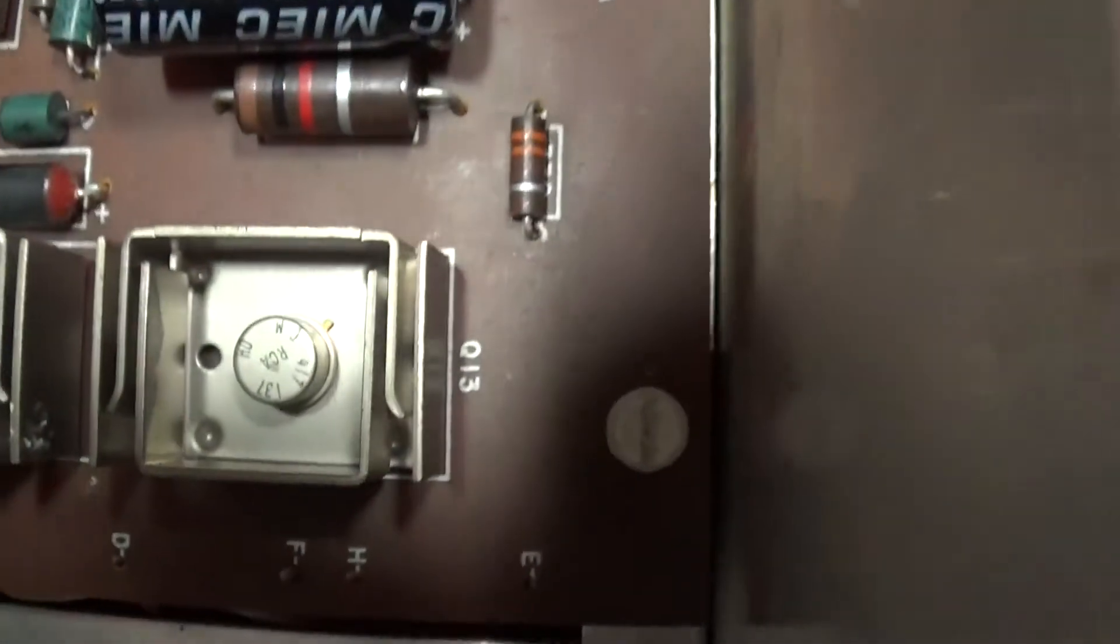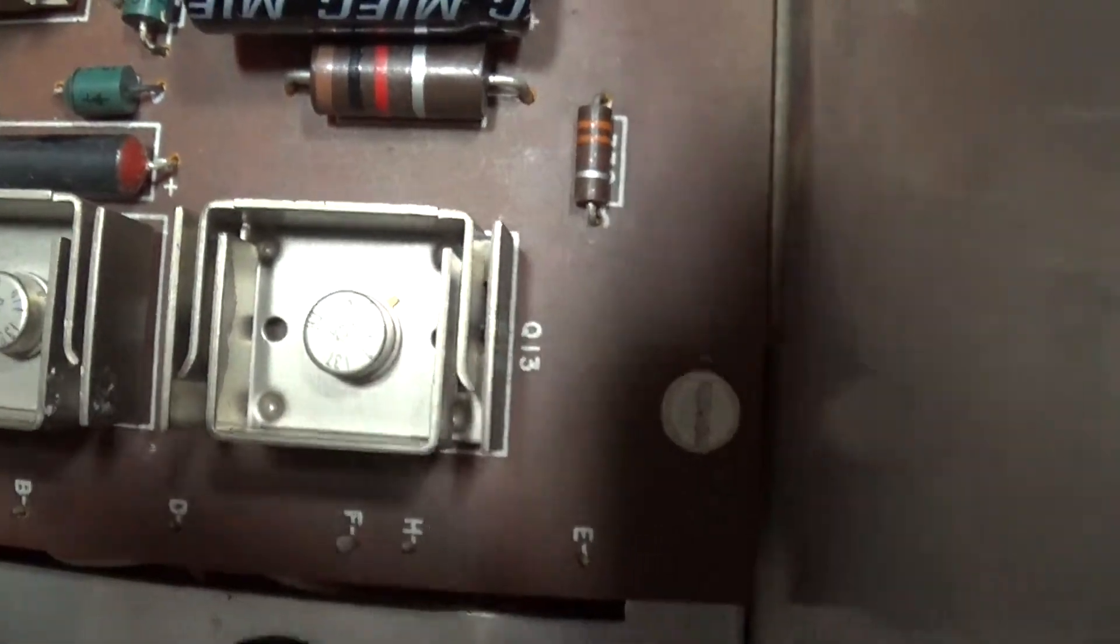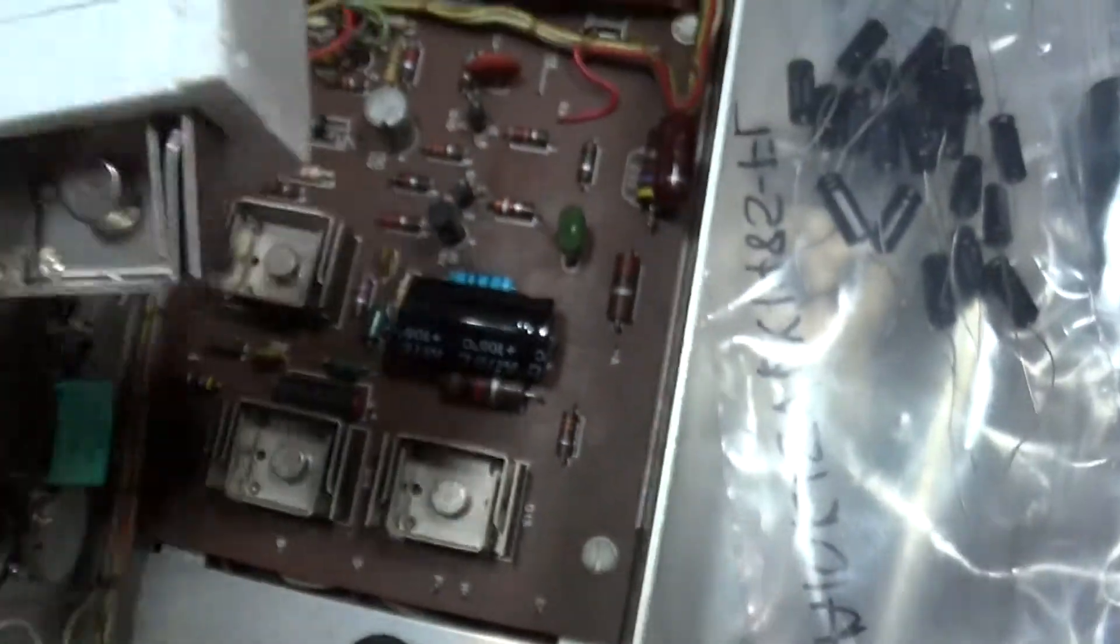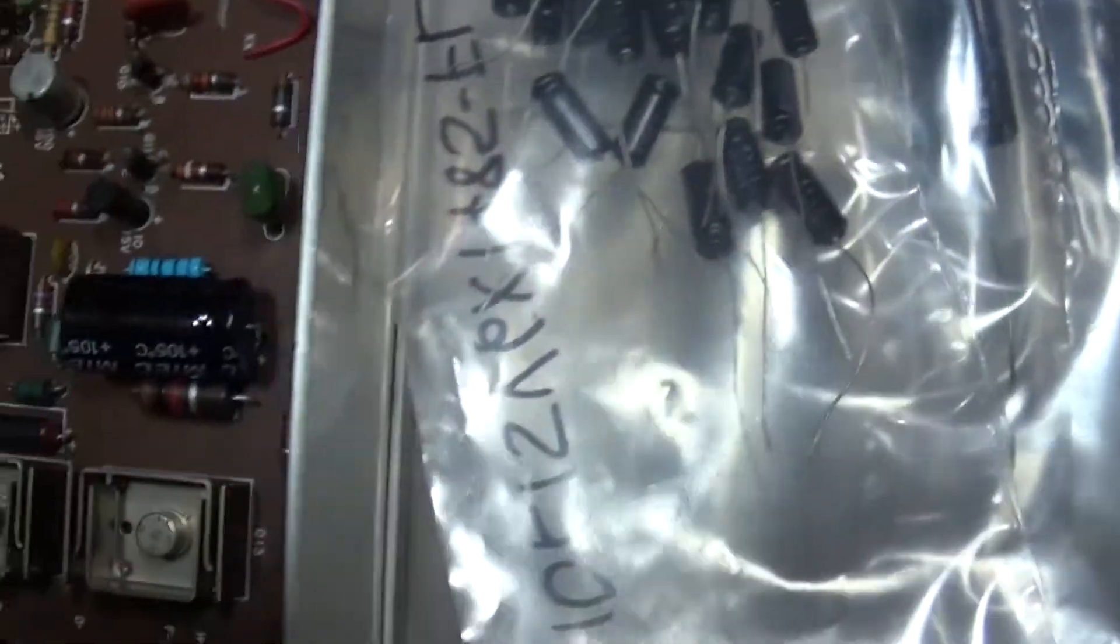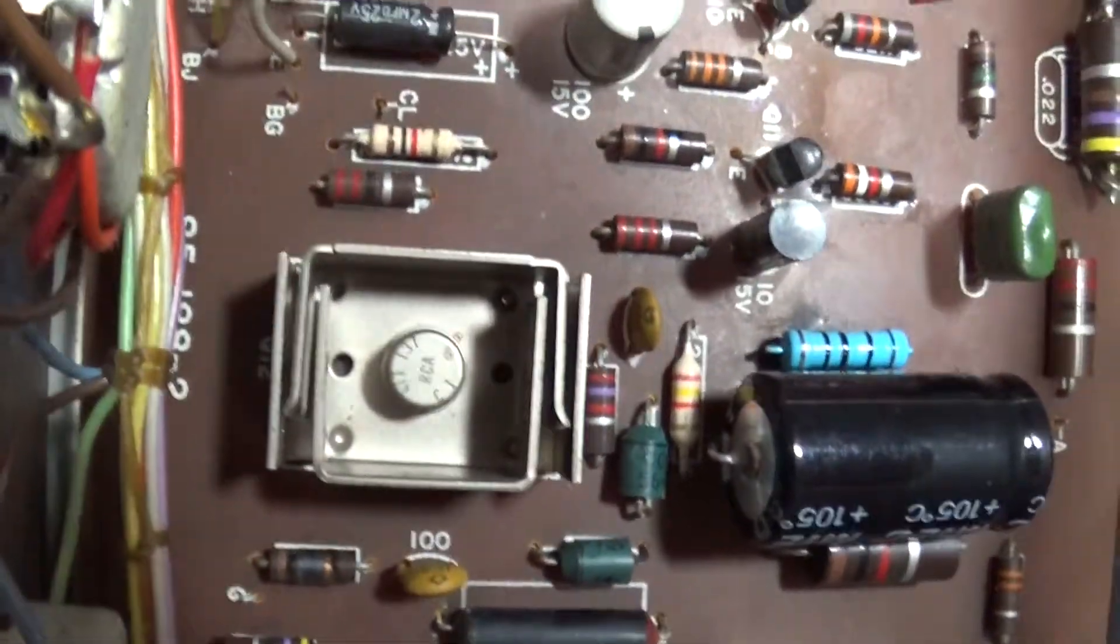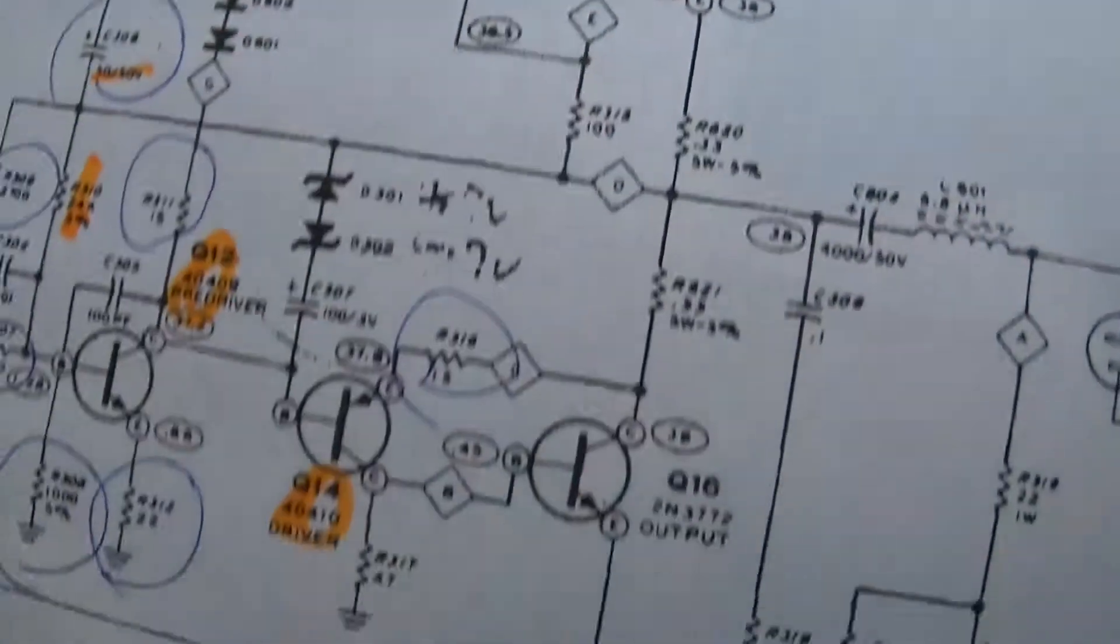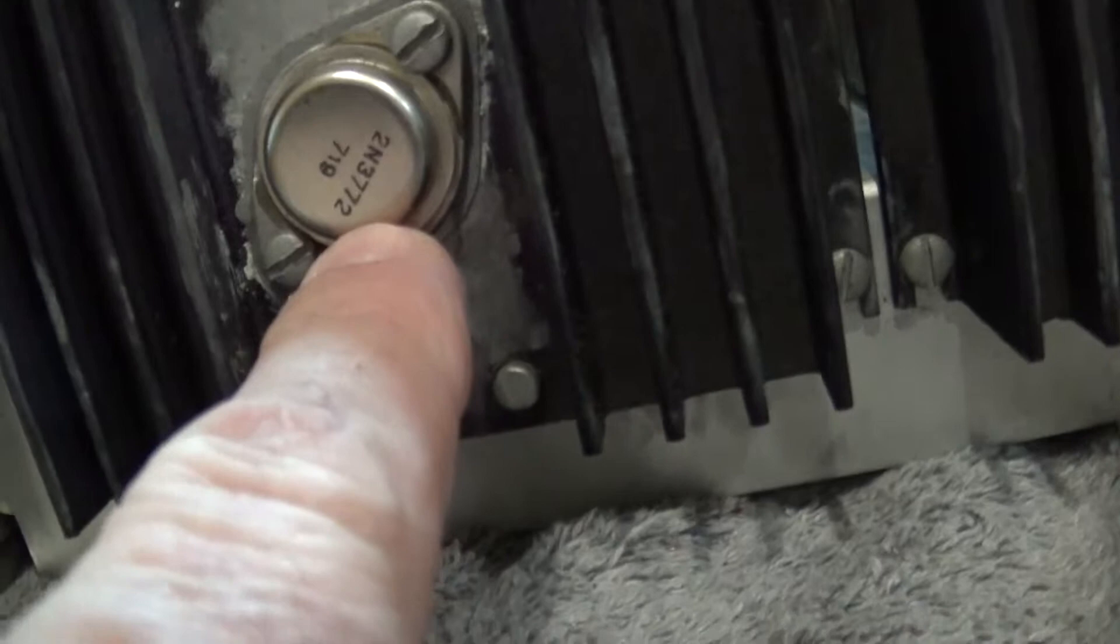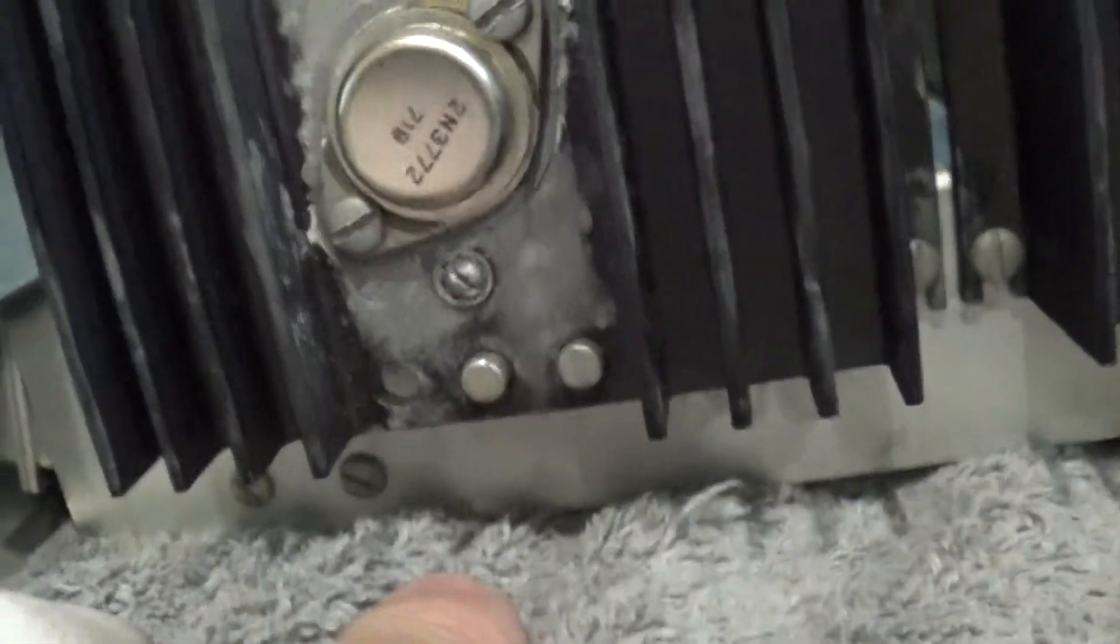So let's see what we have here. There's Q13. That's a 40409. We know we have the replacement part for that right here. Where's Q15? I see 14. That's 12. Oh wait, I know where it is. It's right here. That's Q15 right there. It's a 2N3772.